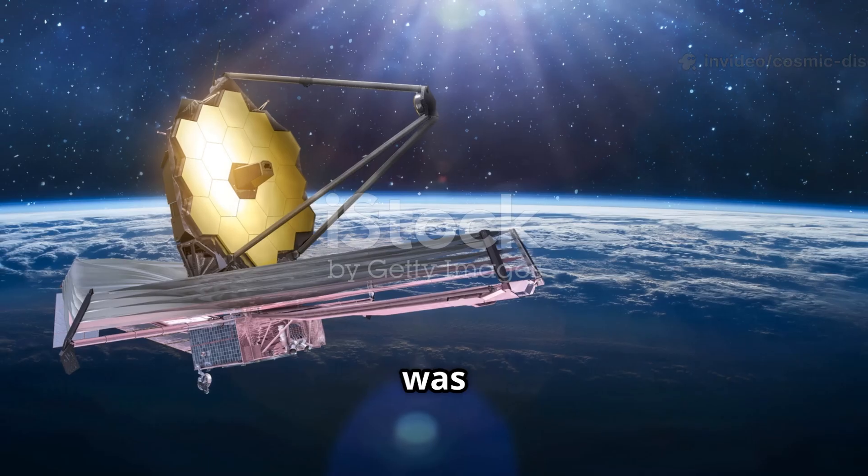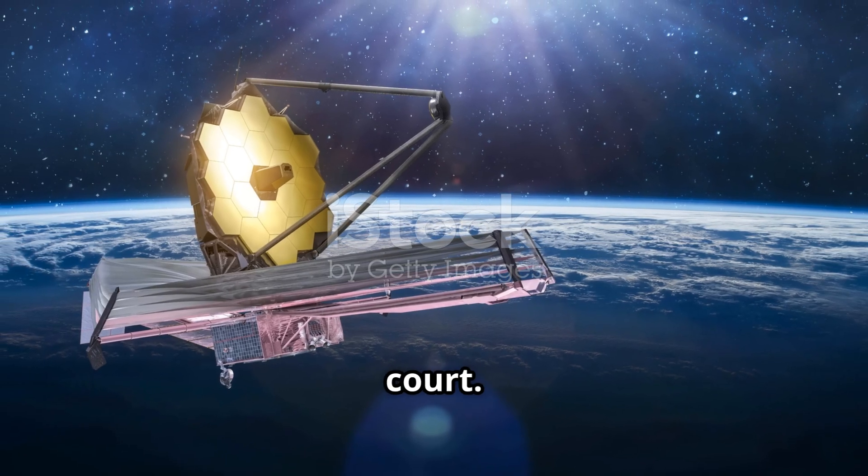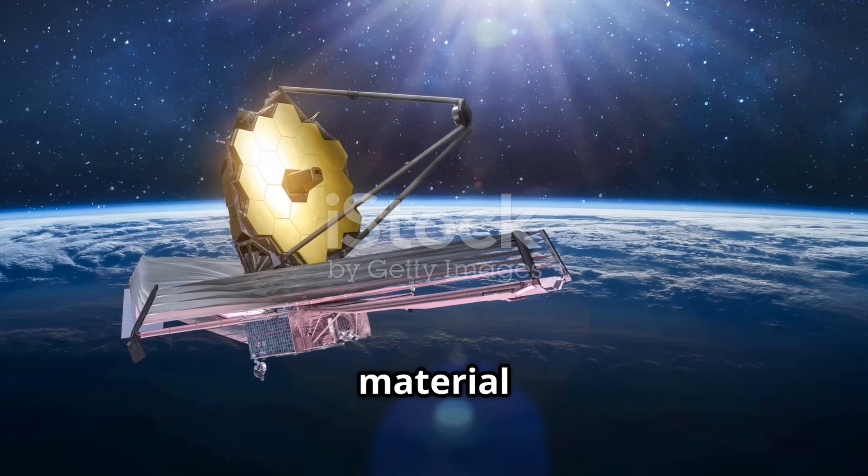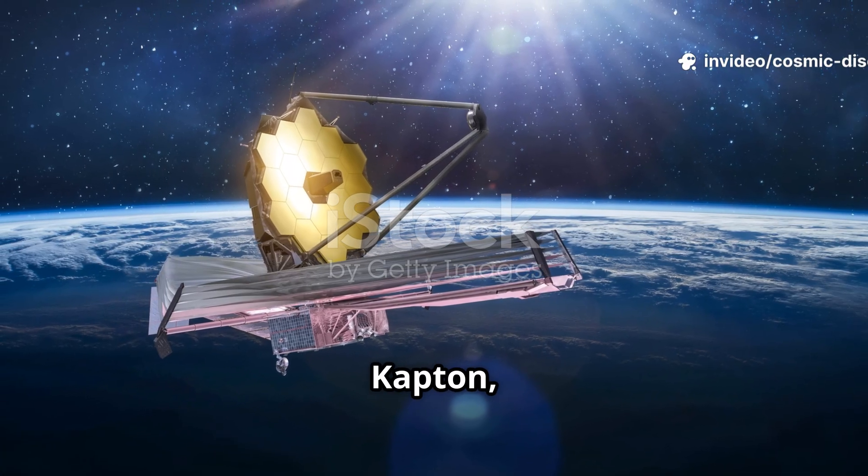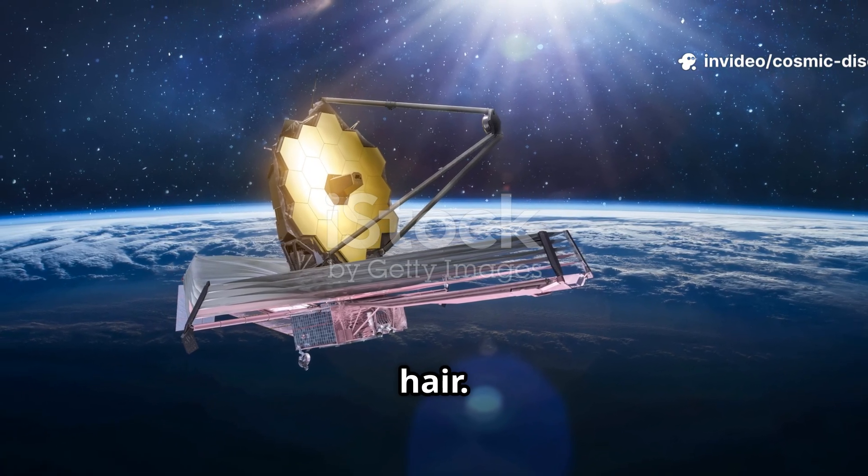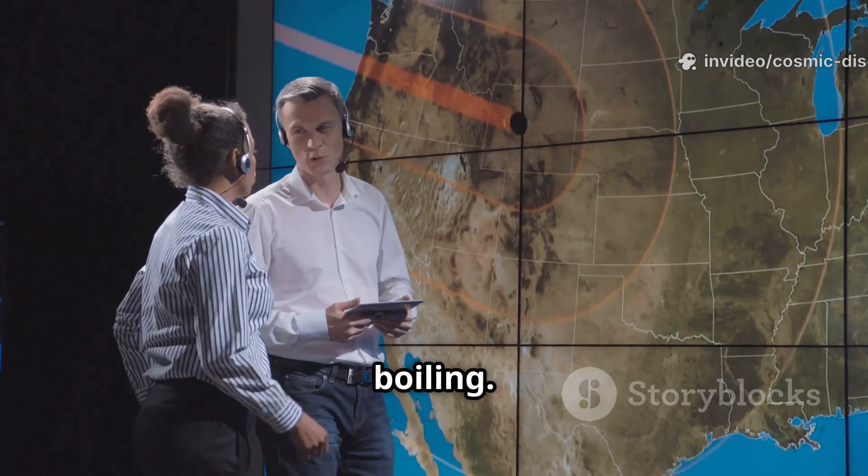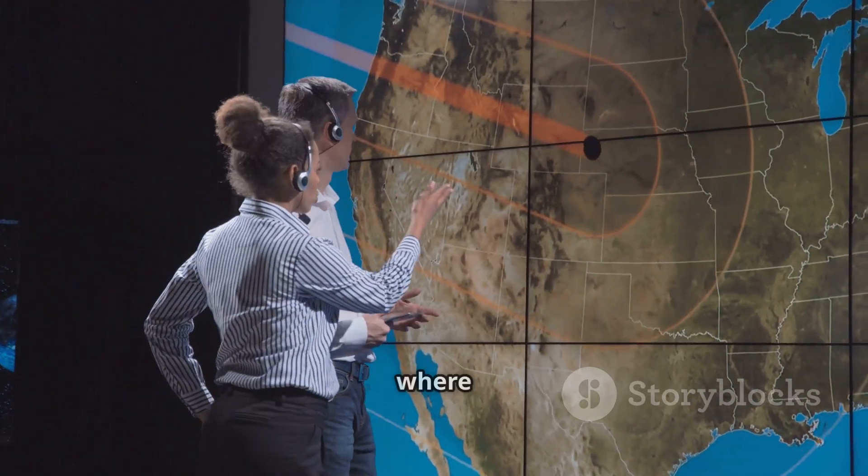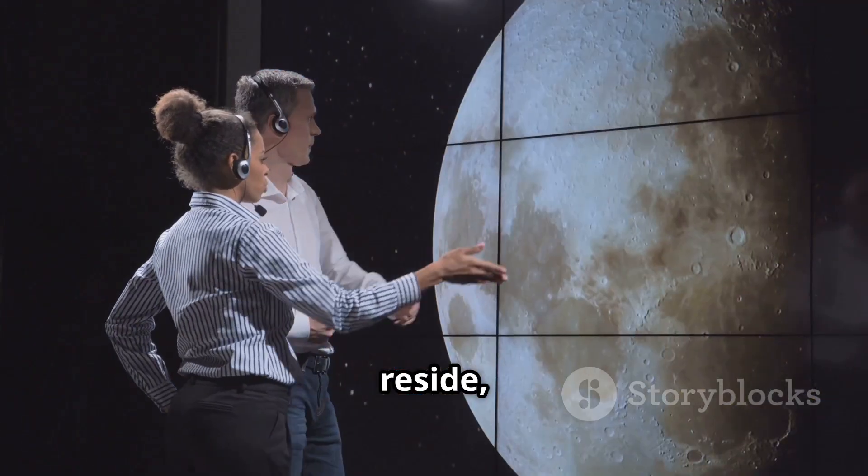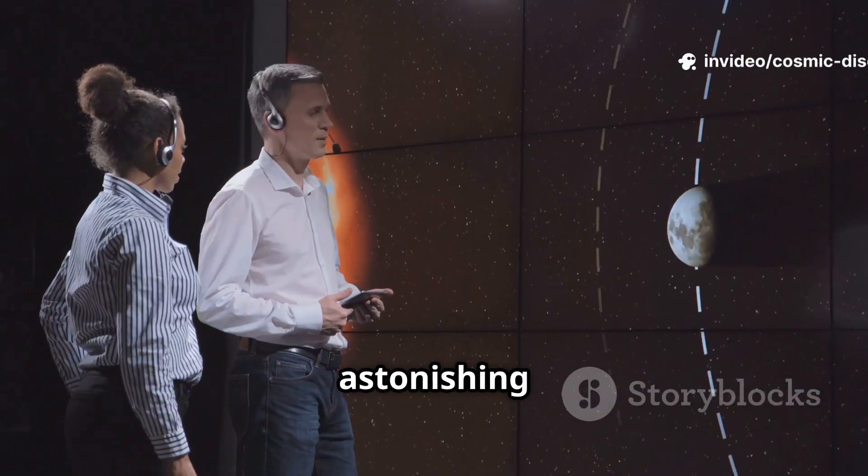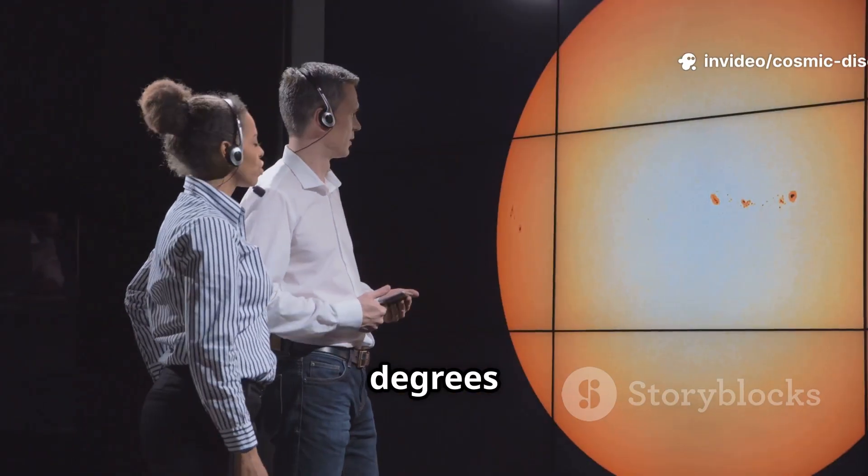The solution was a sunshield the size of a tennis court. It is made of five layers of a special material called Kapton, each layer as thin as a human hair. On the sunlit side, temperatures can reach well above boiling, but on the shaded side, where the telescope's mirrors and instruments reside, the temperature plummets to an astonishing minus 233 degrees Celsius.